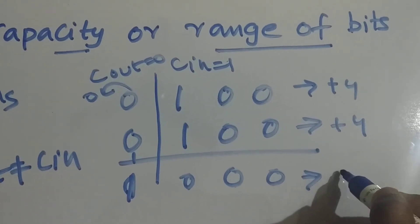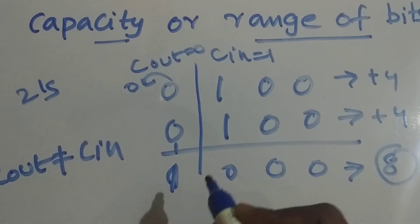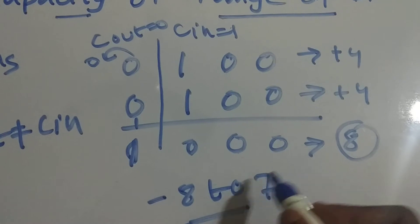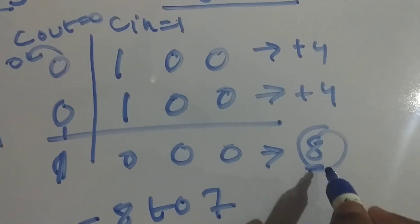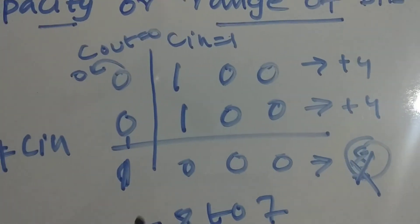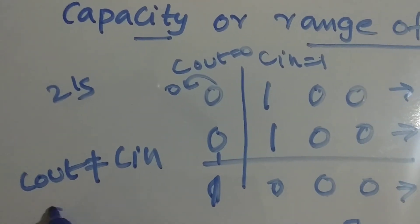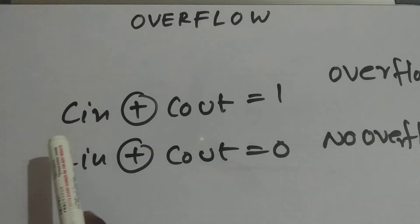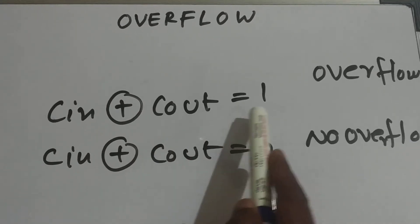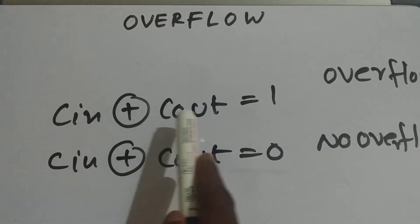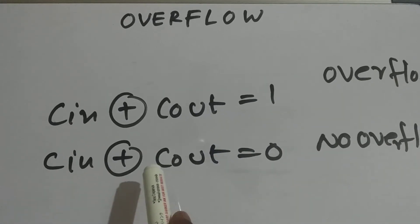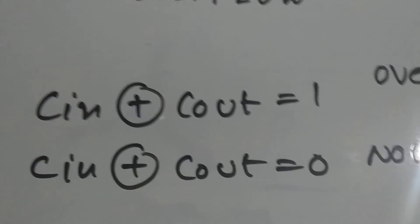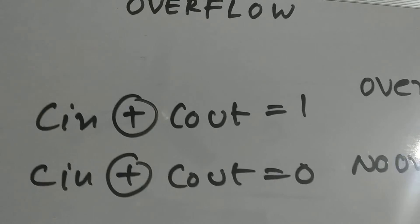Here C_out is not equal to C_in. This is +4 plus +4, which should be 8, but the 4-bit two's complement range is -8 to 7, so 8 is not representable — it results in an overflow. The condition for overflow is: C_in XOR C_out = 1 means overflow; C_in XOR C_out = 0 means no overflow.